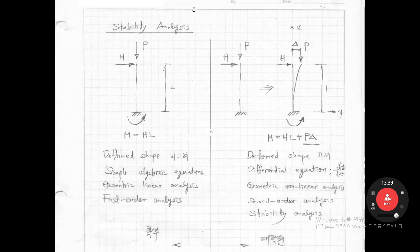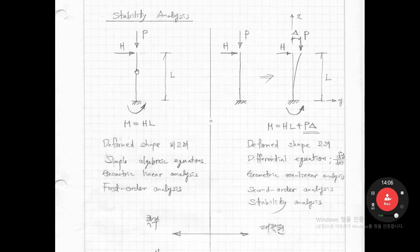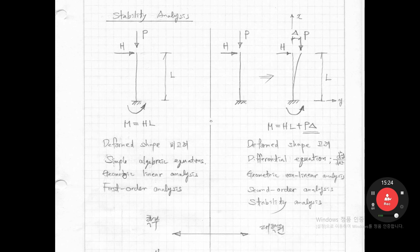I'd like to introduce stability analysis, another term for which is nonlinear analysis — meaning we consider buckling in the analysis. In undergraduate study, we consider a cantilever column with axial force and lateral load H applied at the top, and calculate the reaction moment as H times L. In that calculation, we ignore the deformed shape and use simple algebraic equations like M = HL. We call it geometry linear analysis, also known as first-order analysis.